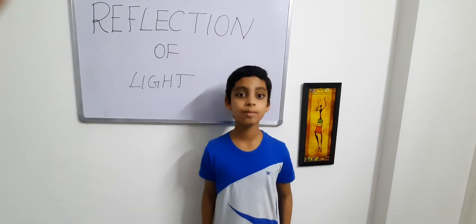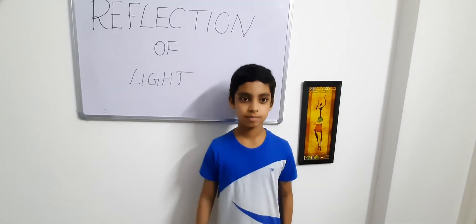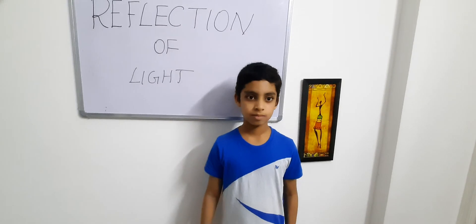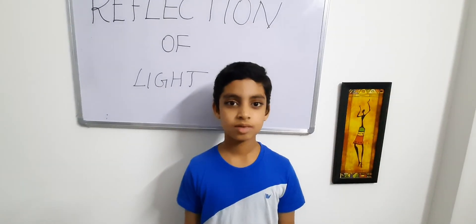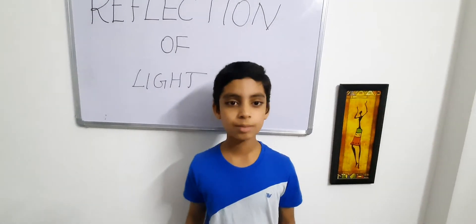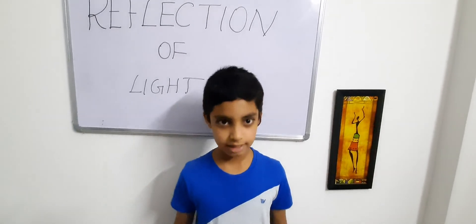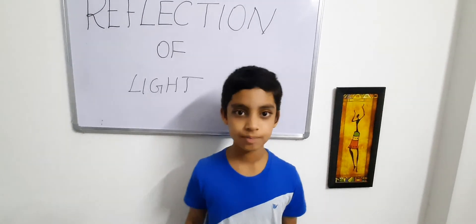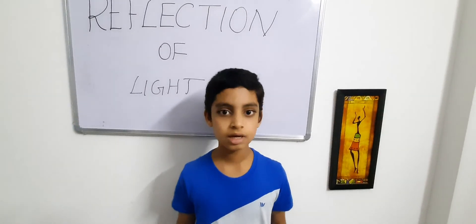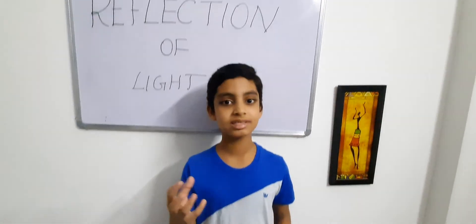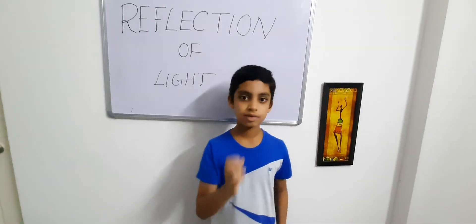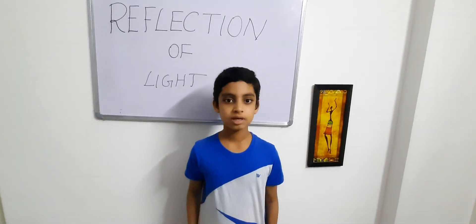The characteristics of a plain mirror are: The images formed by a plain mirror are always behind the mirror. It is virtual. It is always the same size as the object. And it is erect. Thank you.